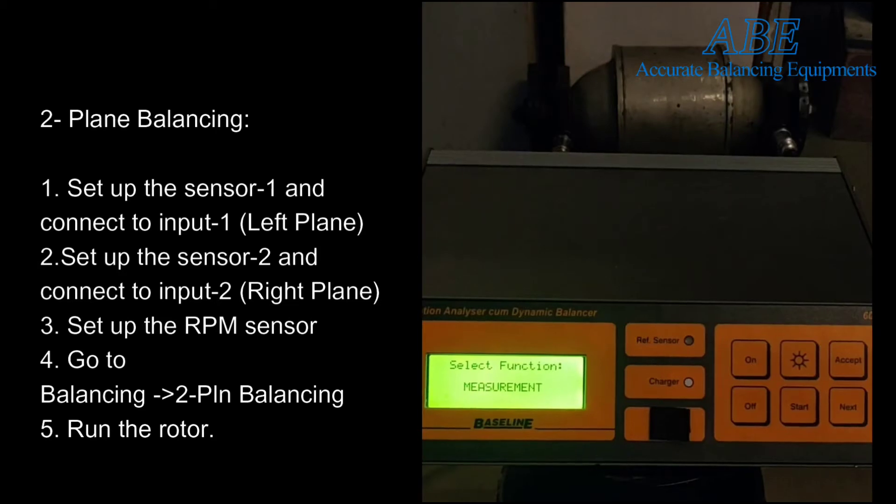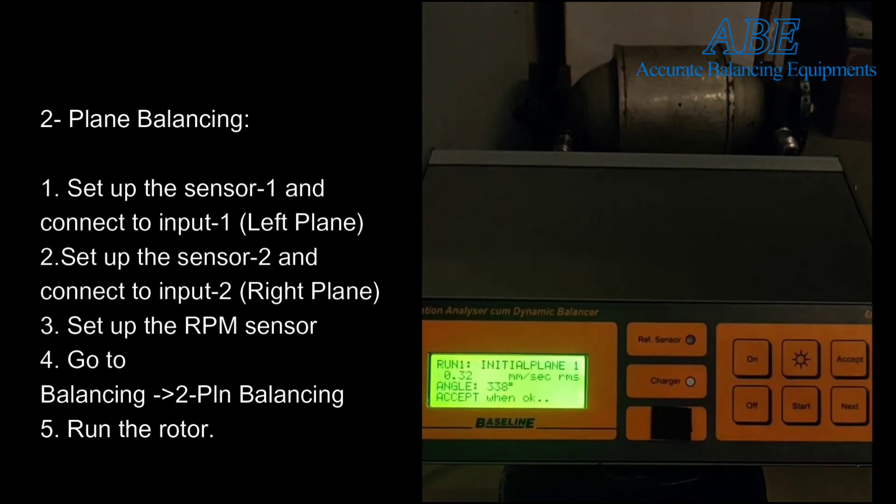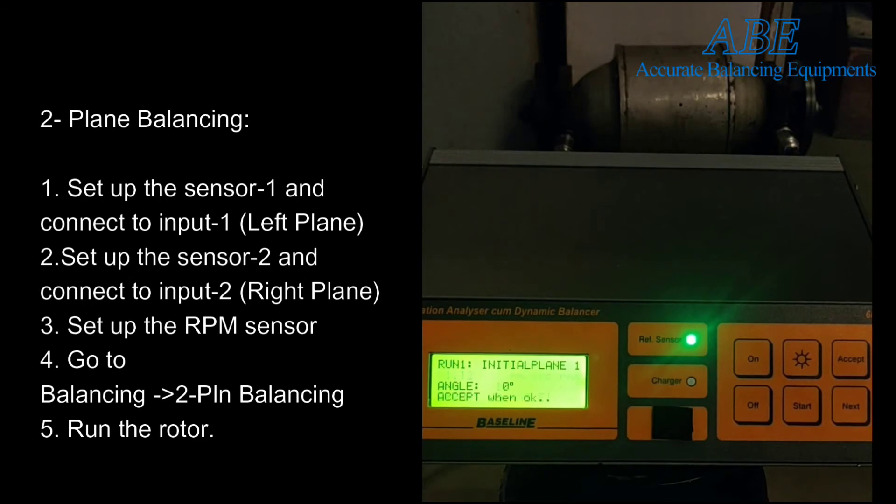Here is a demo of two-plane balancing using the 6050. Connect one sensor to input 1, left plane, and the other to input 2, right plane. Make appropriate instrument settings in balancing setup. Connect the reference sensor, then go to balancing and select two-plane balancing.